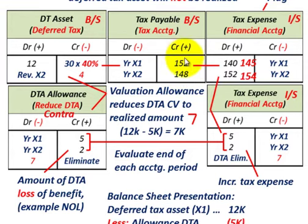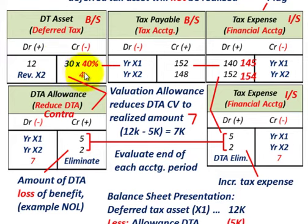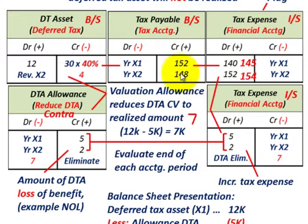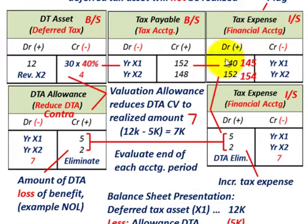For year X2, our taxes payable we calculated to be $148,000. And then the deferred tax asset starts to reverse itself at $10,000 per year times the 40% tax rate, giving us a credit or reduction in the deferred tax asset of $4,000. For our tax expense, we have a credit of $148,000 in taxes payable plus a credit of $4,000 reduction in deferred tax asset, so we need $152,000 worth of debit to tax expense.